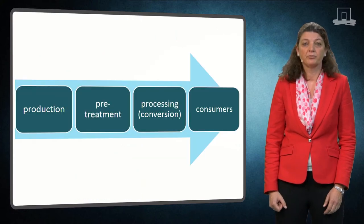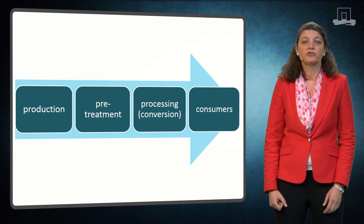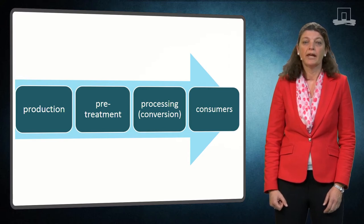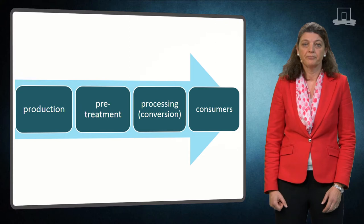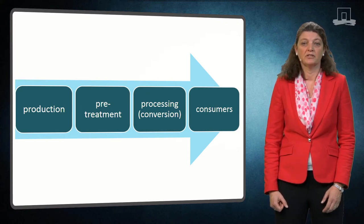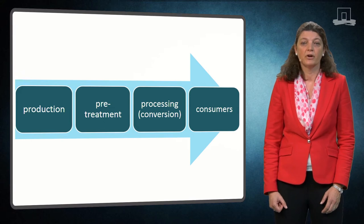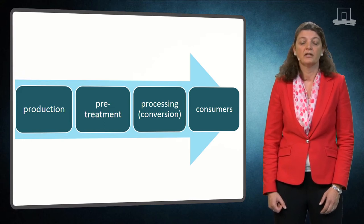The production of biobased products like biofuels and bioplastics requires the transport of biomass from land to the end consumer. Along the way, biomass goes through a series of stages which comprise the biomass supply chain.